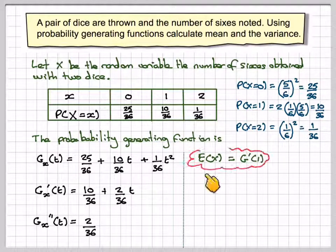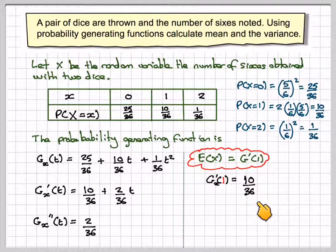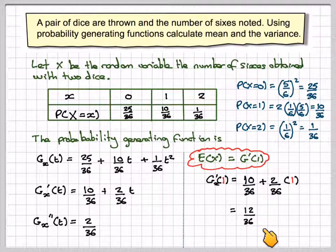For the expectation, the mean, we need to find G'(1), so we need to put 1 in here. So we're going to get G'(1) is 10 over 36, plus 2 over 36 times 1, which is going to give me 12 over 36, which is 1/3.